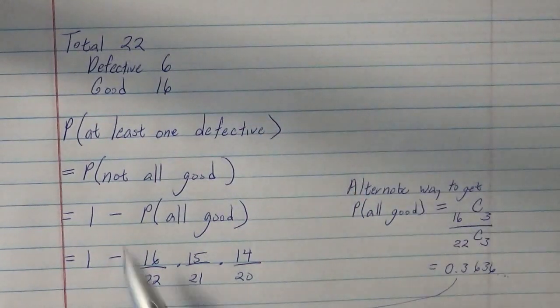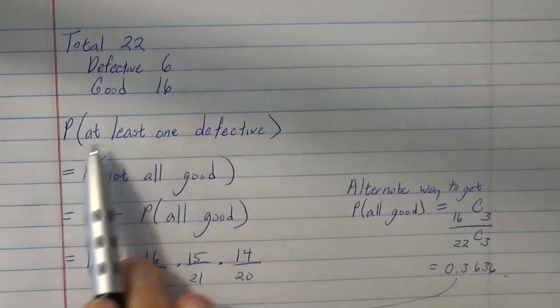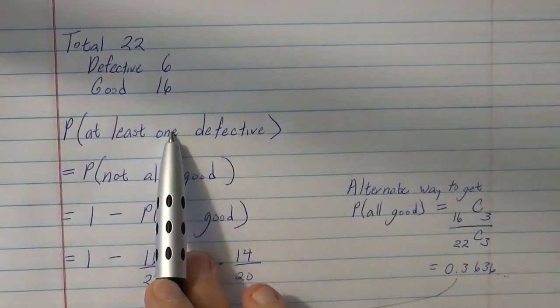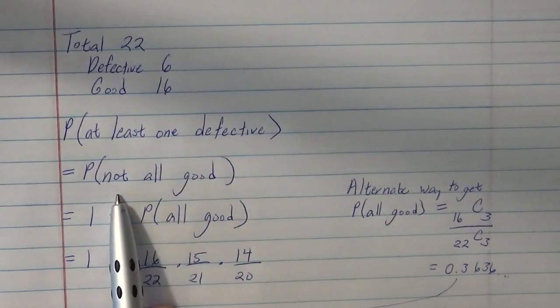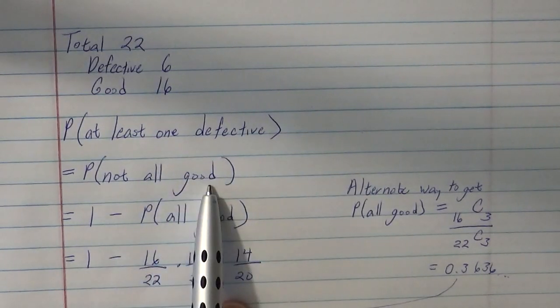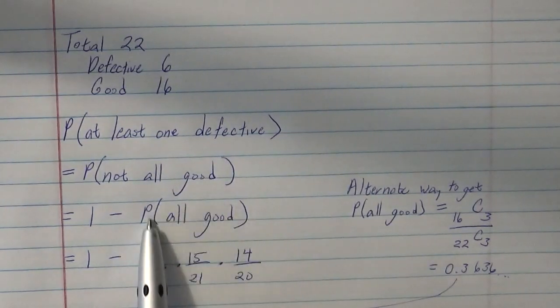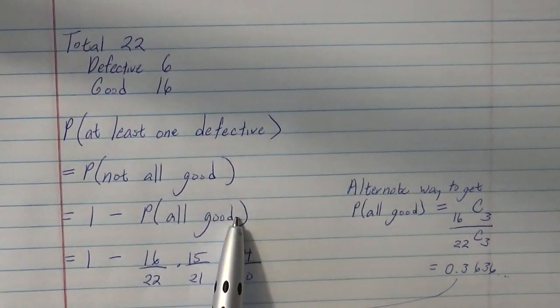And if we want the probability of at least 1 defective, whenever you see that at least 1, that means not none. If at least 1 is defective, that means that not all of them are good. Which means that if we found the probability that all of them were good and just said, hey,